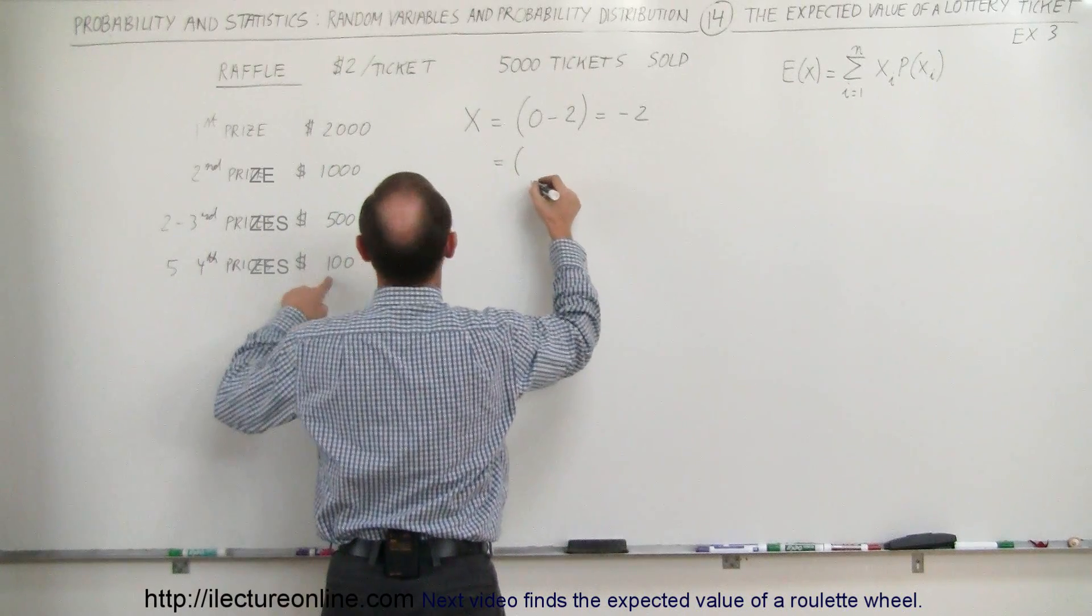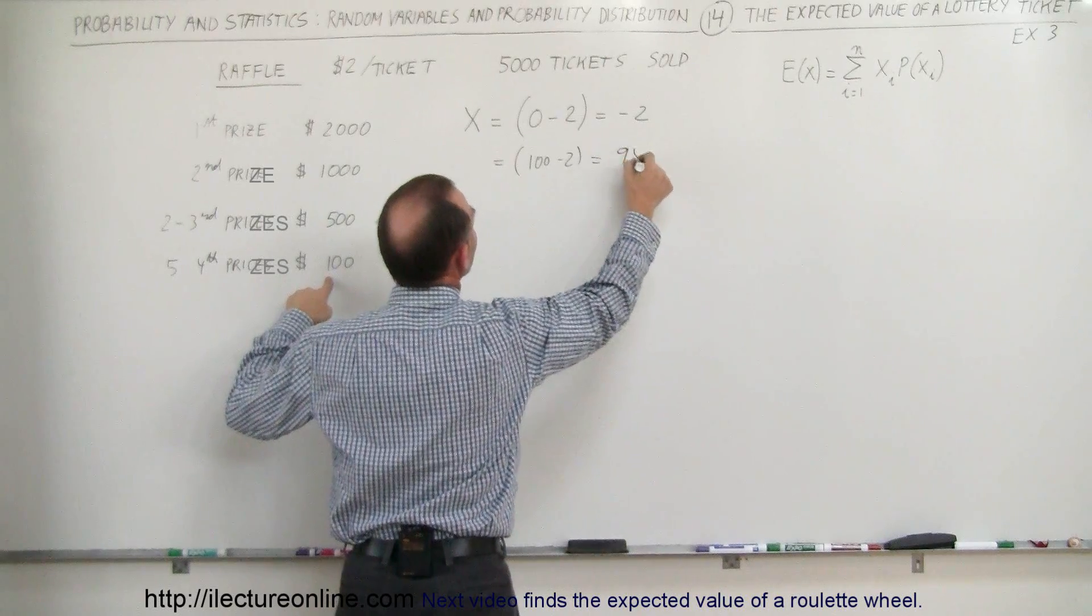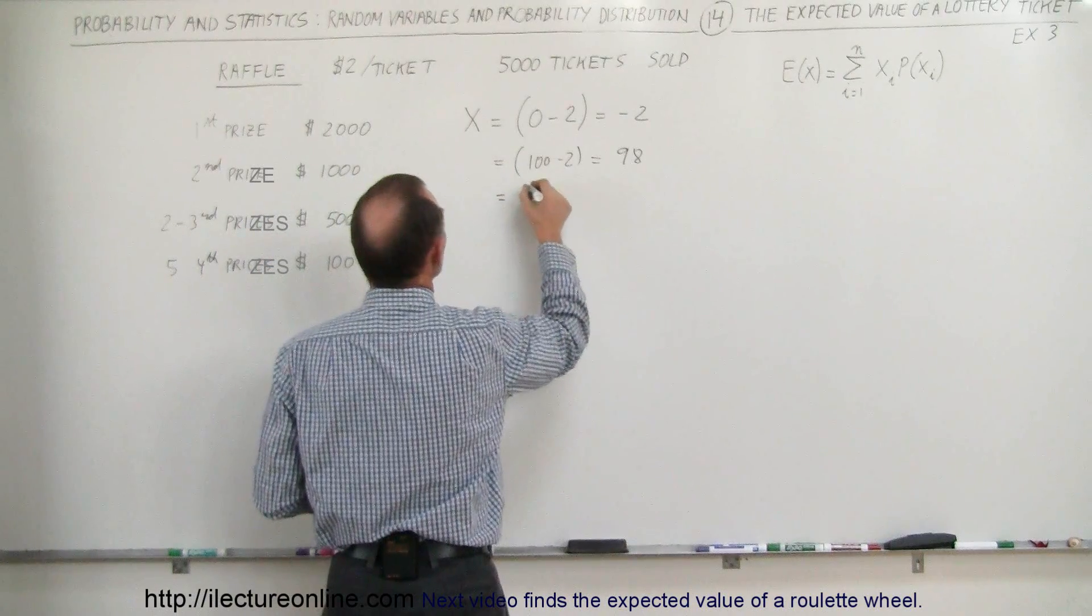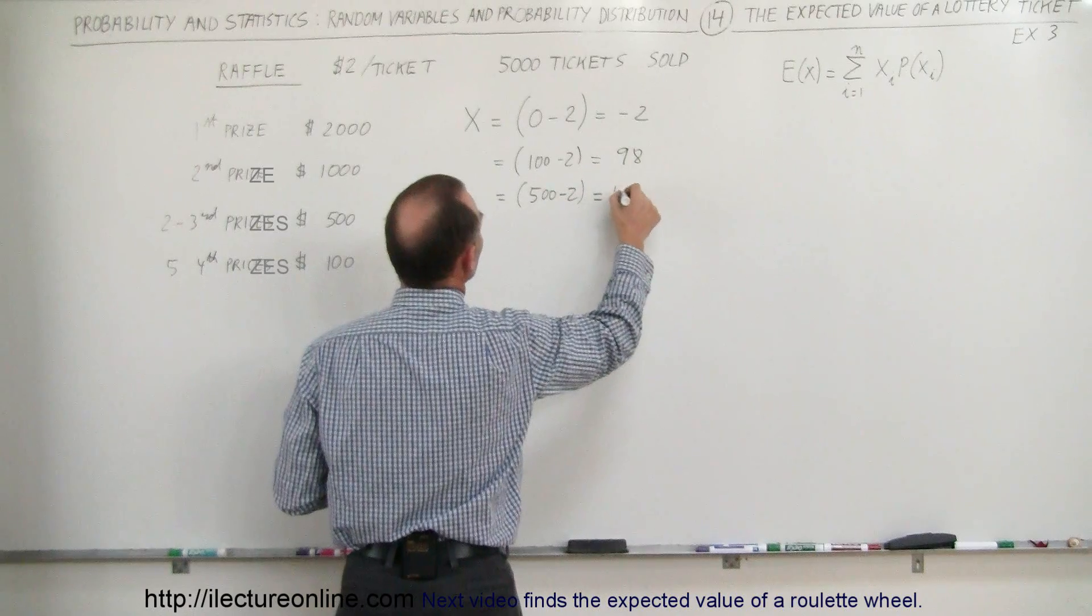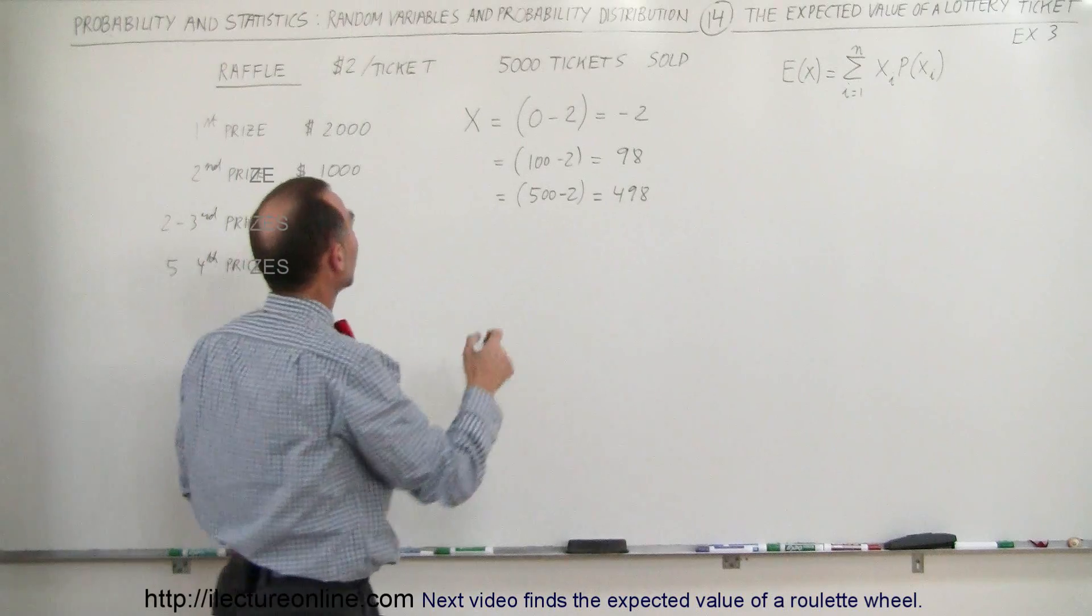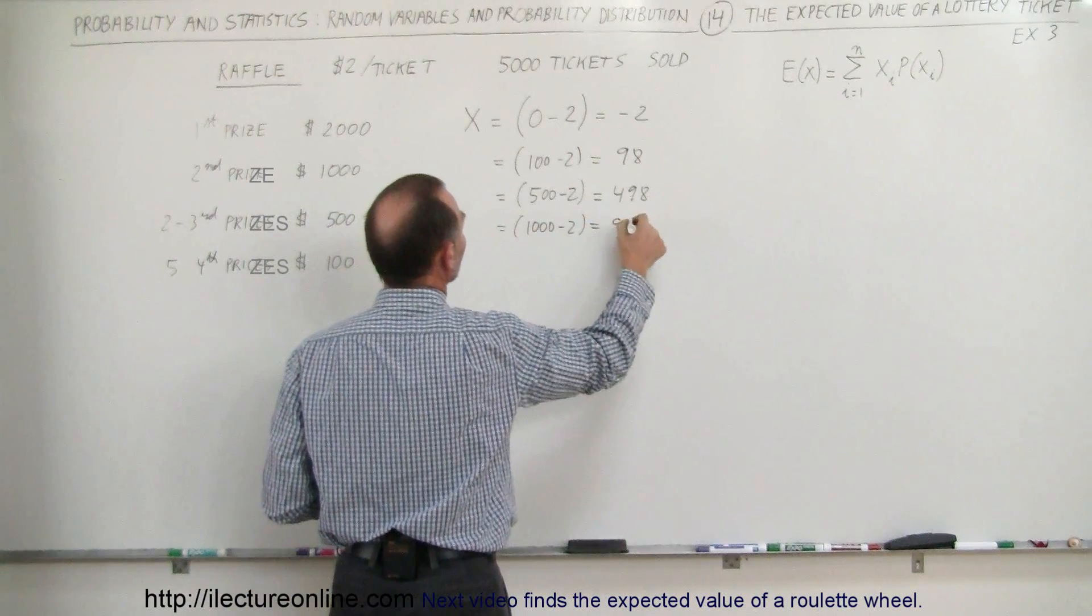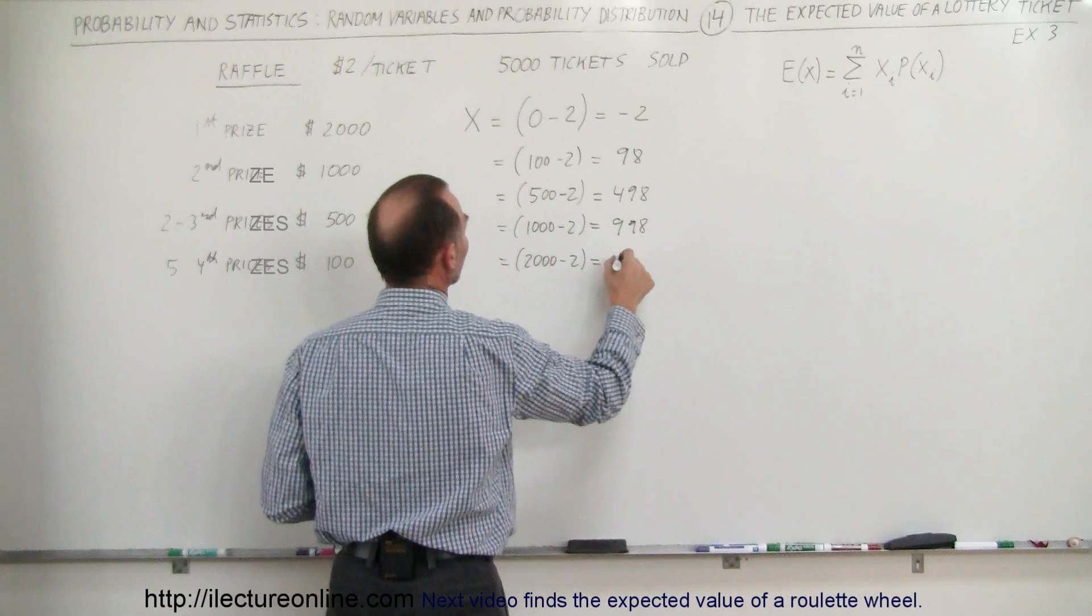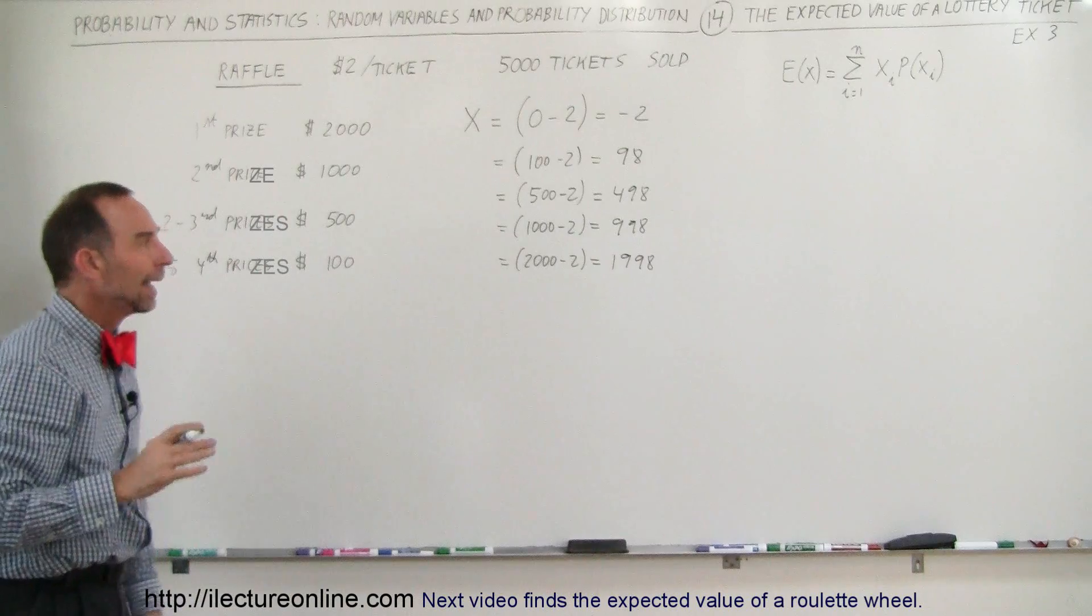But it could also be that you win a $100 prize, and since you have to pay $2 for the ticket, then you get $98 back or you gain $98. And there would be the possibility of winning a $500 prize minus $2 for the ticket, that would be $498. And then you have the possibility of getting $1,000 minus $2 for the ticket, which is $998. Or you have the possibility of getting a prize of $2,000 minus the price of the ticket, which is $1,998. So these are all the possible values for X.